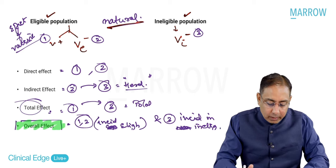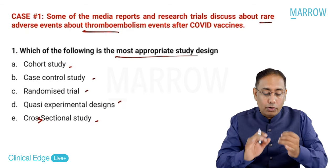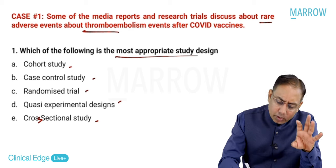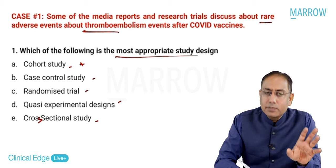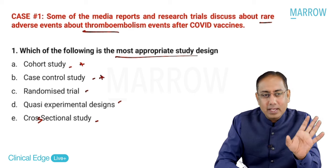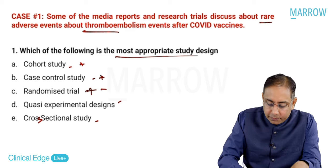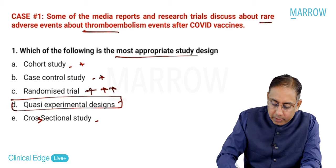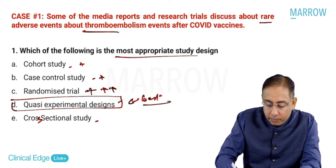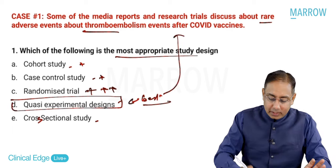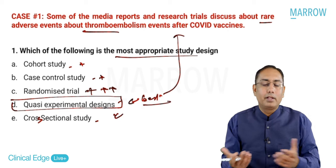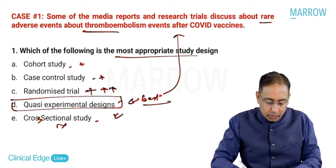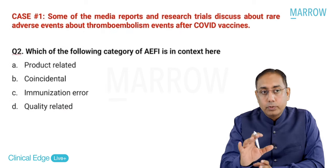Whenever talking about positive or negative effects of vaccines, all study designs - cohort, case control, randomization - are valid. But quasi-experimental designs are the ideal or best type of study designs when talking about vaccines. They score slightly better than randomized trials, and cross-sectional is not a very good design. That was the first case, first question.